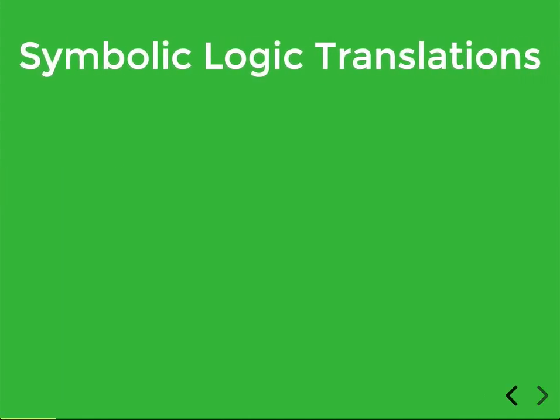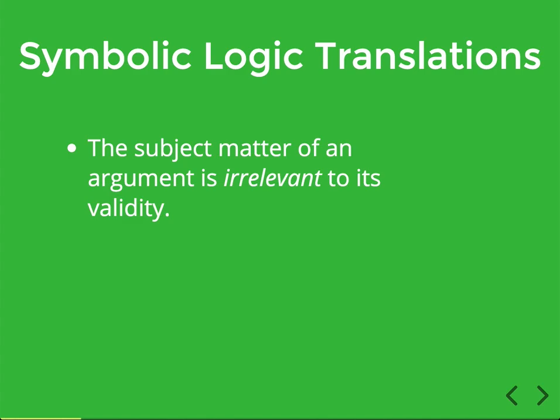So why do we use symbols when analyzing logic? One way to understand the motivation for using symbolic notation is to recognize that logic is concerned with patterns of good versus bad reasoning. When we study validity, for example, we're not really interested in the subject matter of the argument — that is, whether the premises are in fact true or false. We're interested in whether the premises and conclusion have the connection we've called entailment.